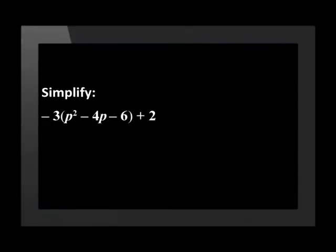Simplify the expression, negative 3, open brackets, p squared, minus 4p, minus 6, close brackets, plus 2. There are two terms in the expression, separated by the plus.